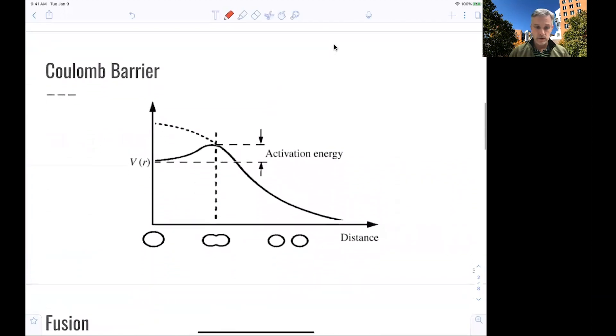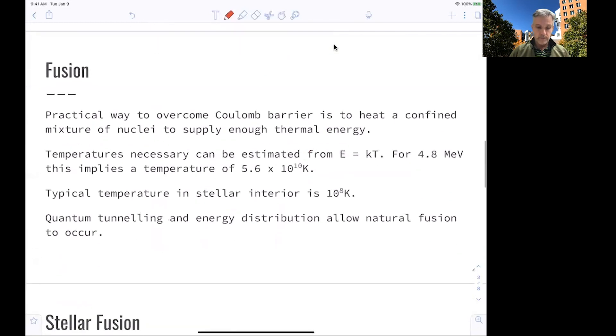The difficulty in nuclear fusion is that we now have to overcome the Coulomb barrier from the other side. We have to bring two light nuclei together and overcome the Coulomb barrier in order to form this heavier and more tightly bound state. The practical way to overcome the Coulomb barrier is by creating a confined mixture and supplying heat such that the thermal energy is enough to overcome the Coulomb barrier.